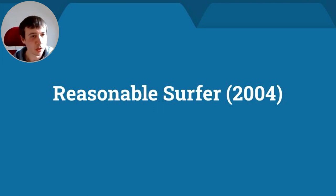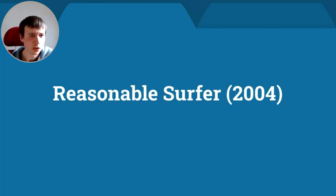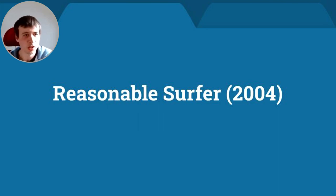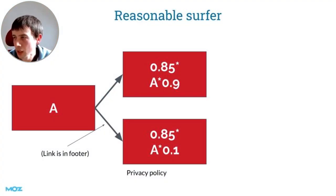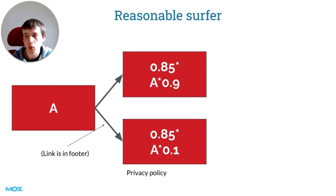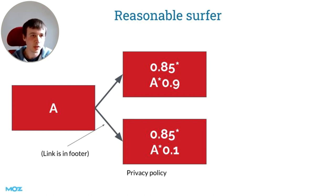Some of the extreme scenarios I just talked about changed a lot for the better in 2004 with something called Reasonable Surfer, which you occasionally still hear people talk about — though it's probably an under-discussed topic. These days — and by 'these days' I mean for the last 17 years — if one of these links is a massive call to action and another is in the footer like a privacy policy link, Google will apply some sense. The probability that people click on each is very different, so they'll split the PageRank — 0.9 and 0.1 for example, still adding up to one — in a more reasonable fashion. They were doing that a long time ago and have probably gotten very good at it by now.